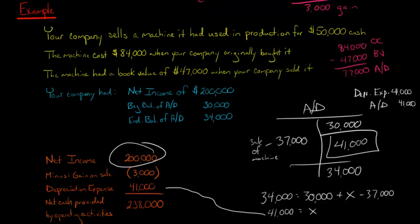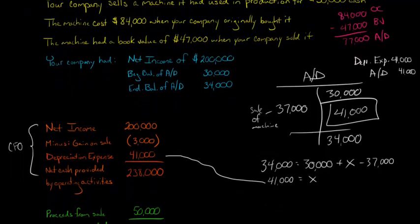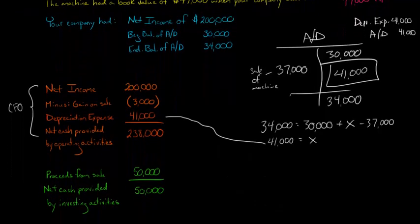So if we take the $200,000 in net income, subtract the gain, add back the depreciation. Why are you adding depreciation back? It's a non-cash charge. It doesn't have anything to do with cash, but it made our net income lower. So that gives us net cash from operating activities of $238,000. So this is our cash flow from operations section. Of course, in a real firm, there will probably be other activities too. I'm just trying to give you something really simple.